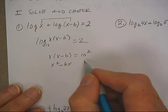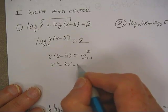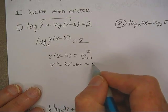So you want x and x minus 6 equals 10 squared. x squared minus 6x, we'll subtract 100 from both sides, equals zero.